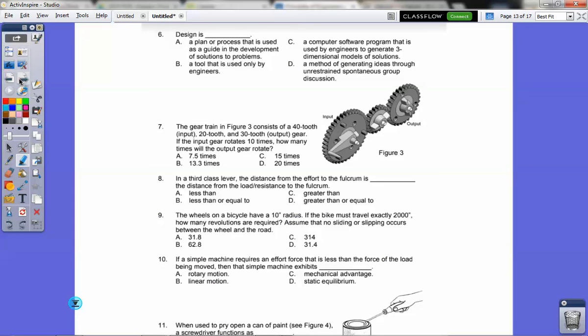Next page. Number six. What is design? Is it a plan of process used as a guide to development solution of problems, a tool used by engineers, computer software program to generate three-dimensional models, or a method of generating ideas through unrestrained, spontaneous group discussion? Answer is A, plan of process. Question seven. The gear train in figure three consists of 40 tooth, 20 tooth, and 30 tooth output gear. If the input gear rotates 10 times, how many times will the output gear rotate?